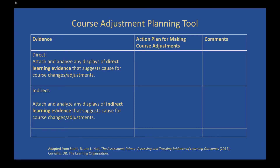We have a tool called the course adjustment planning tool that makes it easier to keep track of what they're doing. They can pull direct evidence of the learning outcomes from those assessments in the courses, and also any indirect evidence — such as self-assessments by students, reports by employers, student evaluations of instruction to the extent those ask specific questions about course learning outcomes. So we have both direct and indirect evidence, and this is a tool to create an action plan to help the department figure out what they want to change.